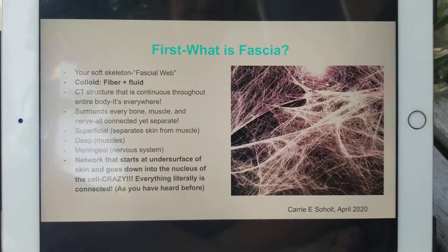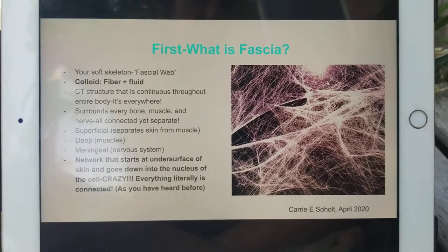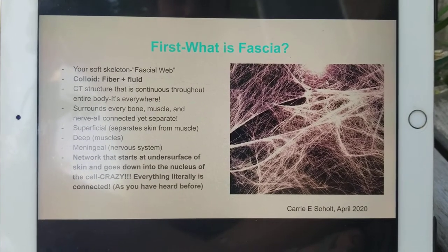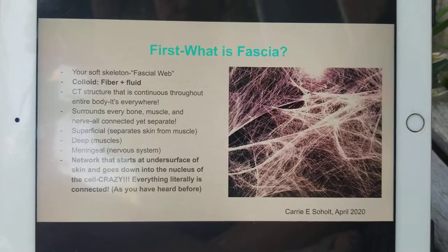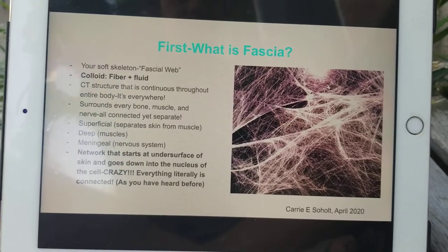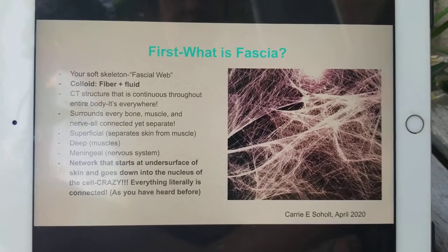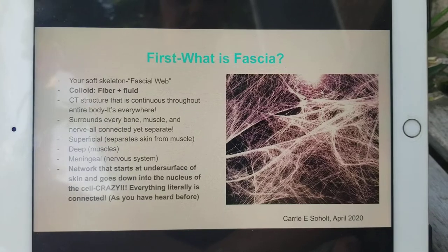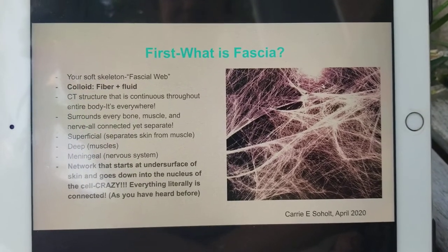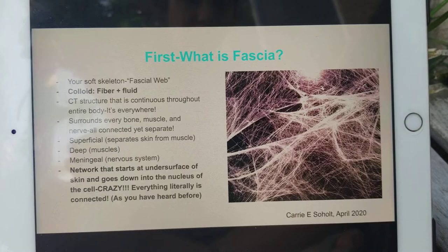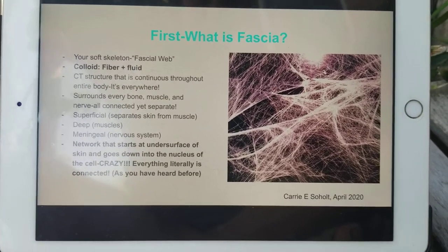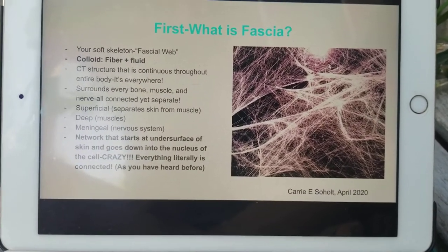It's considered connective tissue. There are all kinds of different types of tissue in our body, and fascia is considered a connective tissue that's continuous throughout the entire body. It surrounds literally every bone, every muscle, every nerve. Everything in your body is connected, and this is why, down to the smallest level, literally everything in your body is connected — which is pretty fascinating.